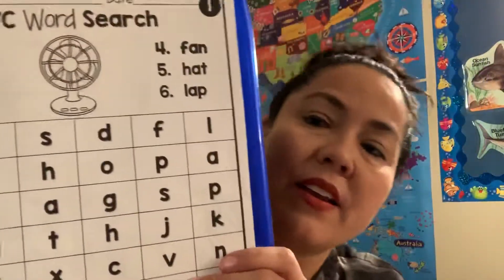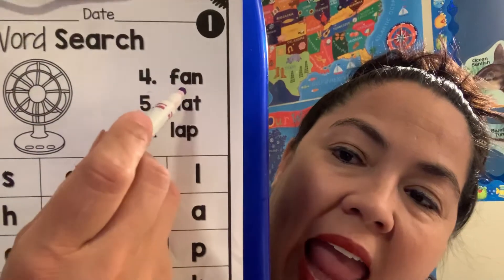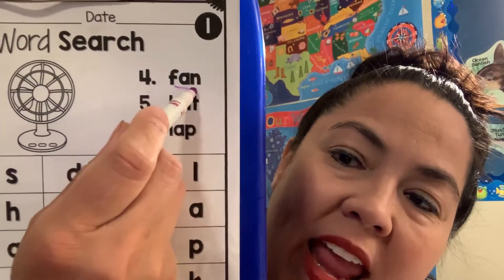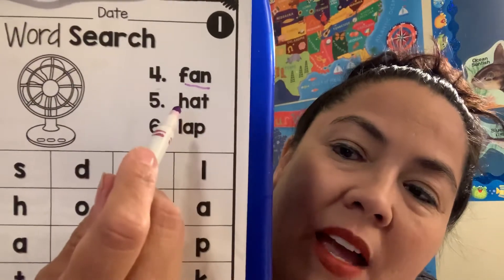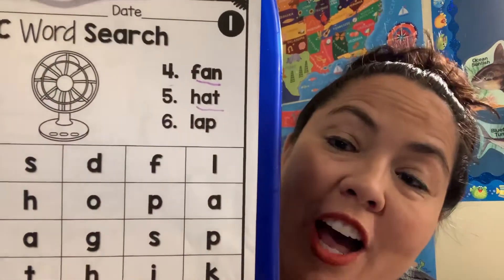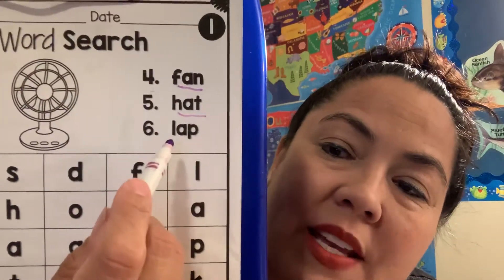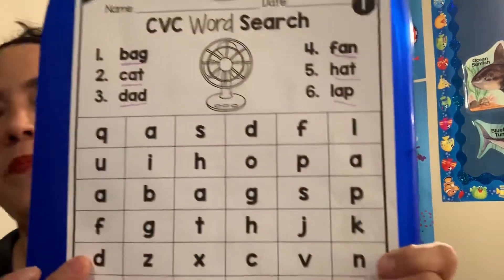And then on this side, we're going to read these words. F-a-n. Fan. Good job, guys. Can you guys help me read the next one? H-a-t. Hat. Good job. And then our last one is l-a-p. Lap. Good job.